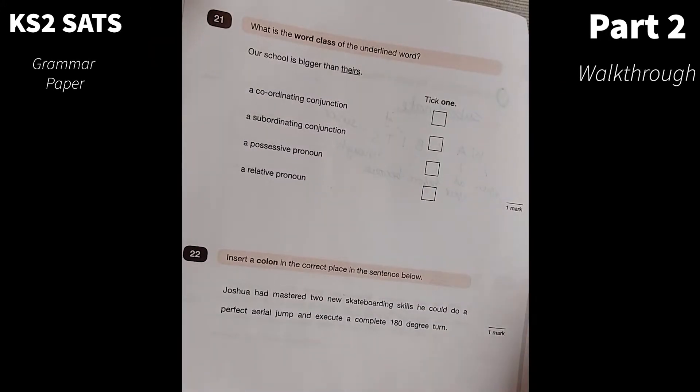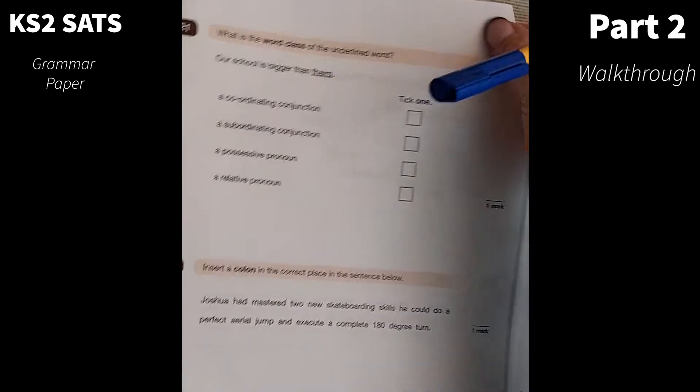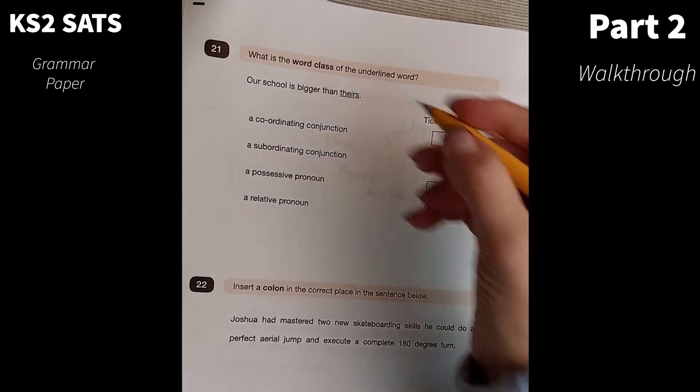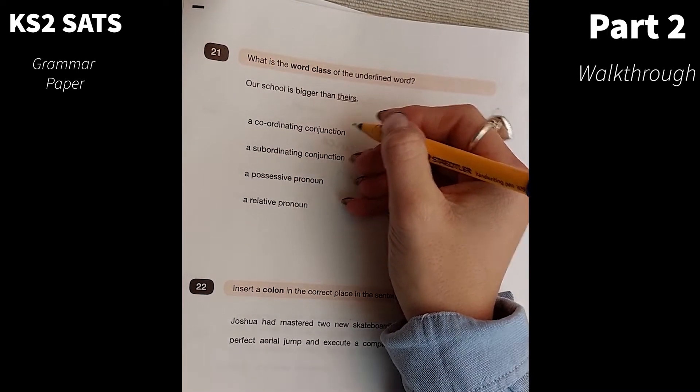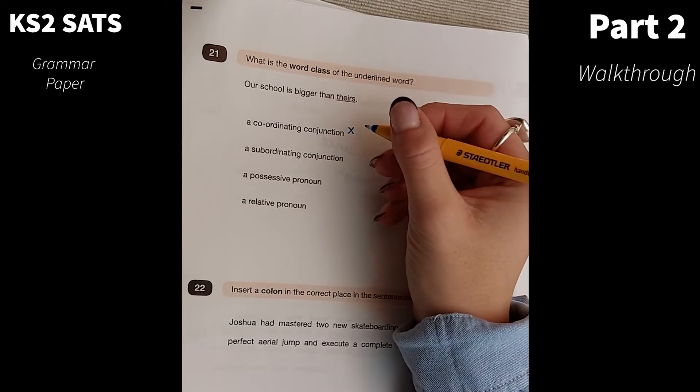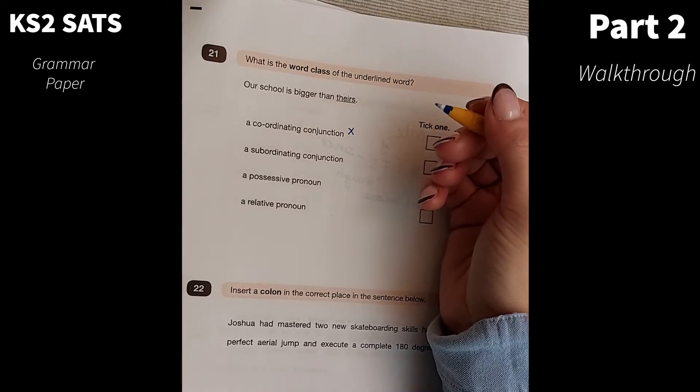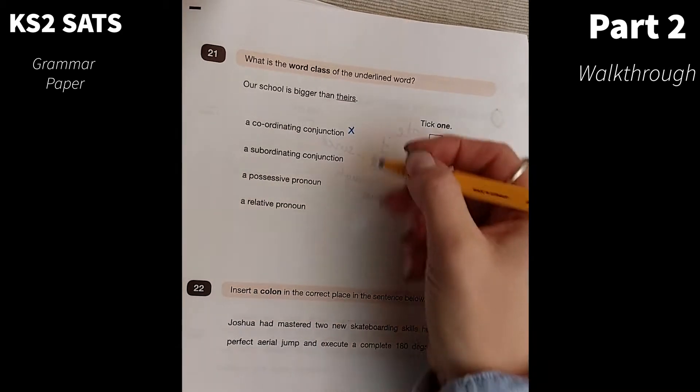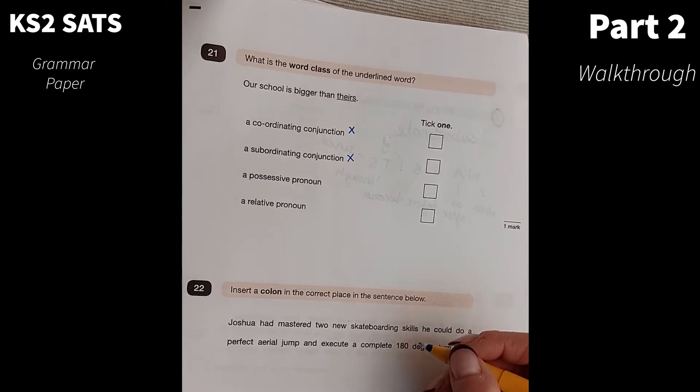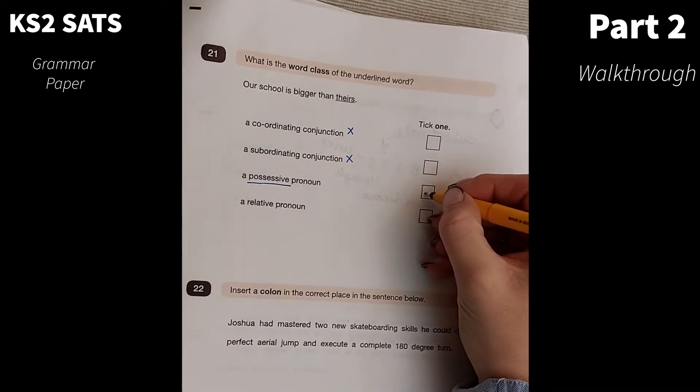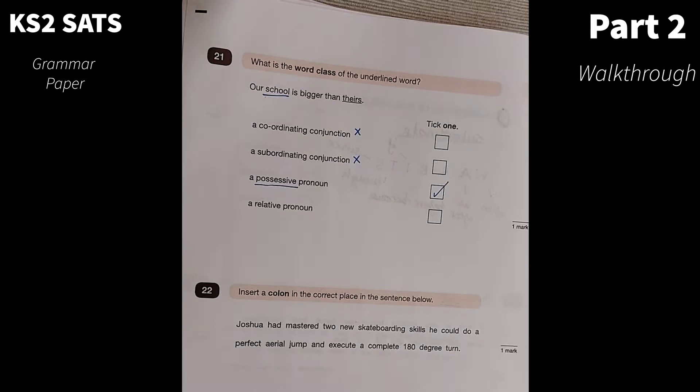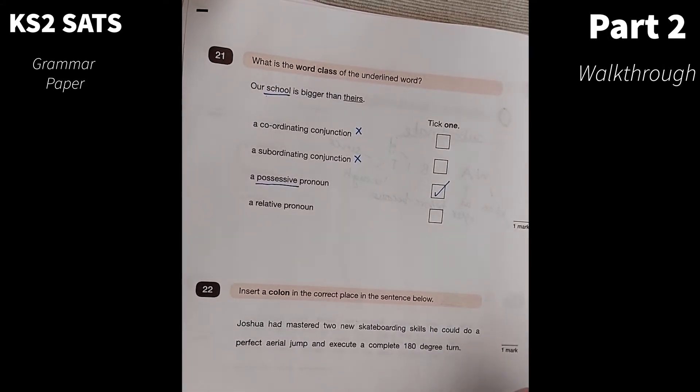Moving on to what is the word class of the underlined word? Our school is bigger than theirs. This question gives us a few different options. We've got a coordinating conjunction. I know that can't possibly be correct because a coordinating conjunction is used to link clauses. A subordinating conjunction, well, I know that it doesn't add additional information to a main clause. A possessive pronoun, well yes, this would be the correct one because it shows possession, the school is belonging to them. So it is a possessive pronoun.